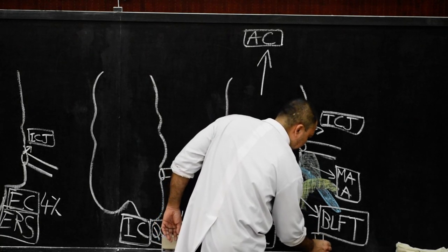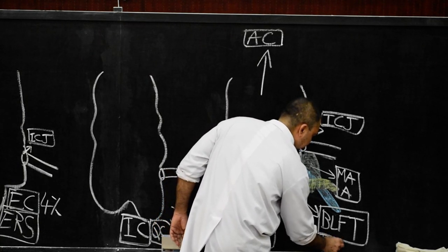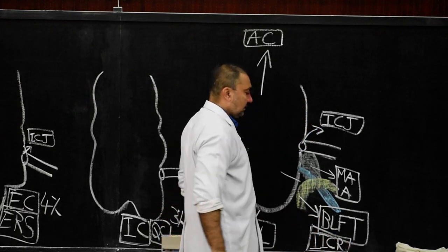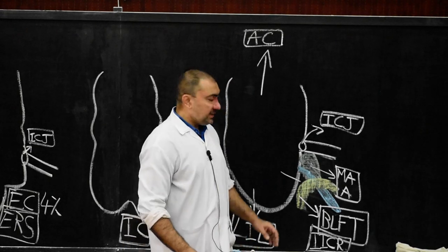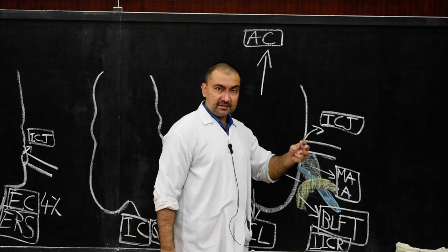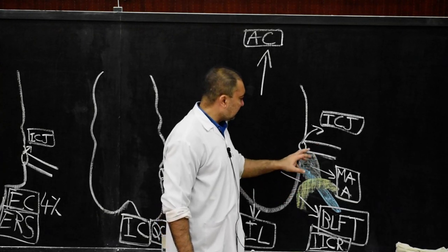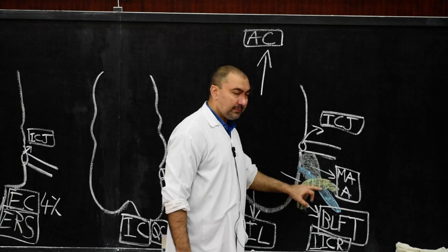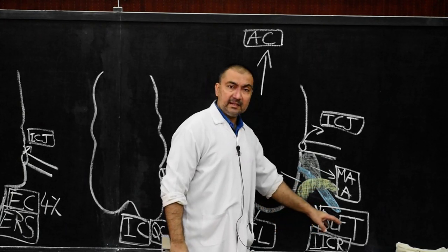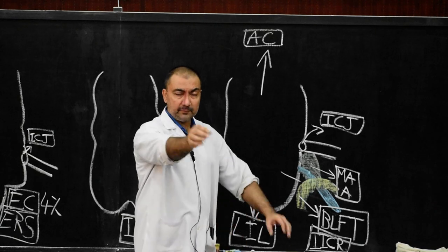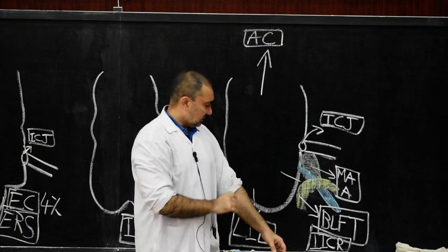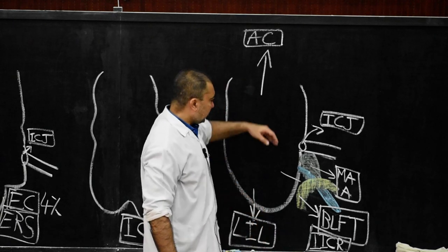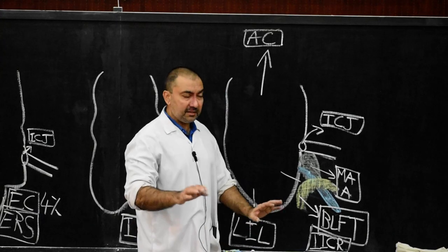The bloodless fold of Treves covering the inferior ileocecal recess is often asked in MCQ and one-mark question answers. So medially, the cecum is related with three structures: number one, the ileocecal junction; number two, meso-appendix with the appendix; and number three, the bloodless fold of Treves — the fold of peritoneum which covers the inferior ileocecal recess.